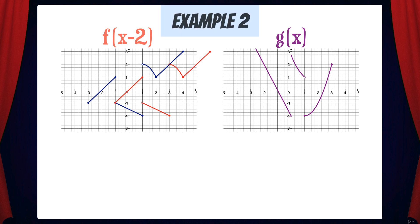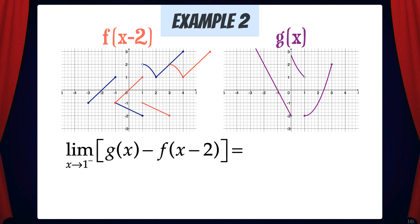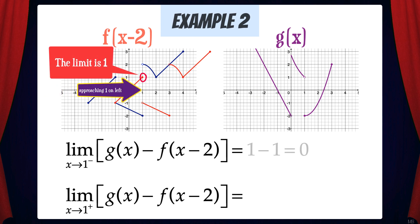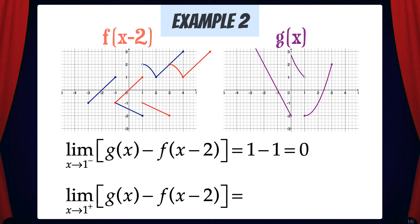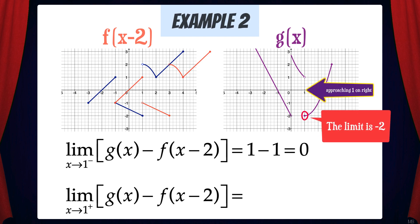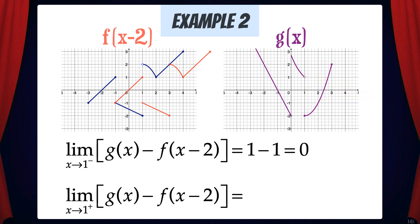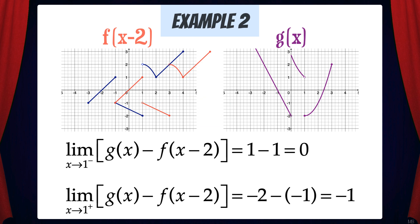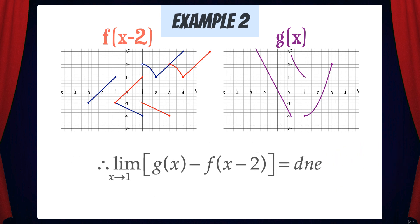So what we need to do is break this problem into one-sided limits. We need to find the limit of g minus f(x-2) as x goes to 1 from the left, then from the right, and see if the limits match. The limit of g as x goes to 1 from the left is 1, and the limit of f(x-2) from the left is also 1. So 1 minus 1 is 0. Now the limit of g as x goes to 1 from the right is negative 2, and the limit of f(x-2) from the right is negative 1. Negative 2 minus negative 1 is negative 1. The left and right-hand limits do not match, therefore the limit does not exist.